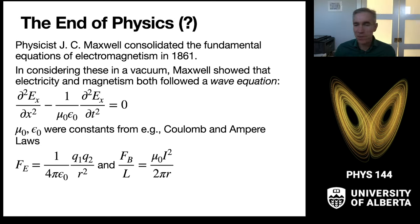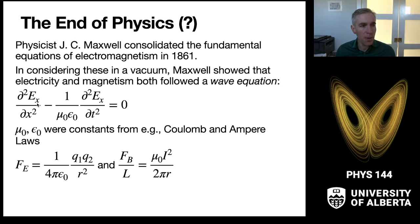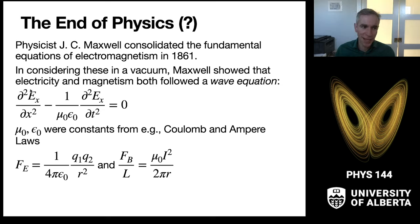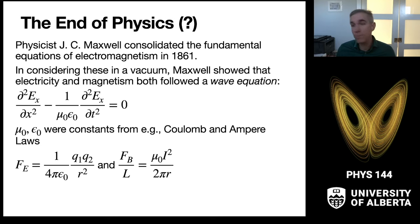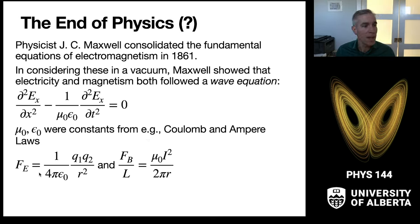In a vacuum, Maxwell's equations showed that the electric and magnetic fields follow a wave equation. The second partial derivative with respect to x of the electric field Ex, plus negative one over (mu-naught times epsilon-naught) times the second partial derivative with respect to time, equals zero. This gives the relationship between how an electric field varies in space versus how it varies in time. The constants mu-naught and epsilon-naught were measured from Coulomb's law and Ampere's law respectively.